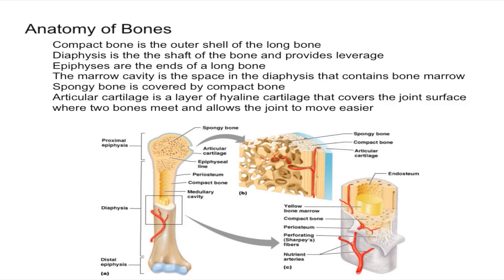Next let's talk about the marrow cavity. The marrow cavity is a space in the shaft of the bone, or the diaphysis, that contains bone marrow. As you can see on the diagram, it's right there, and that's pretty much its only function.